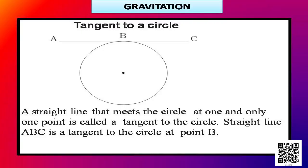This force is called the centripetal force or center-seeking force — the force acting towards the center. You can clearly observe through this activity that in the absence of the force, the stone flies off along a straight line. This straight line will be a tangent to the circular path. A straight line that meets the circle at one and only one point is called a tangent to the circle. As given in your book, straight line ABC is a tangent to the circle at point B — it touches only point B and does not touch any other point of the circle.